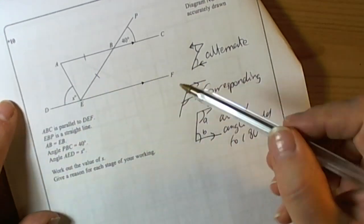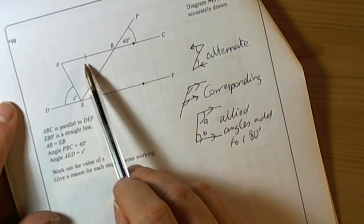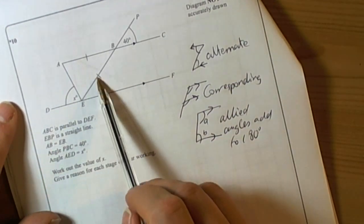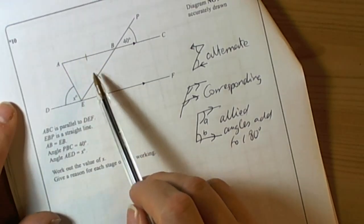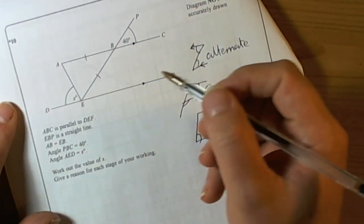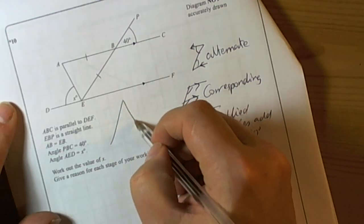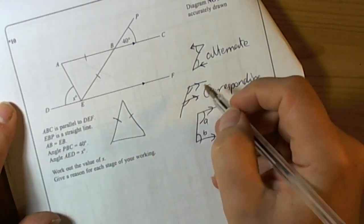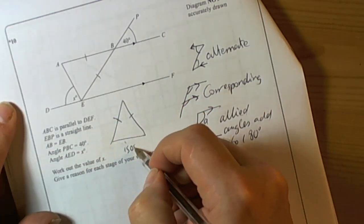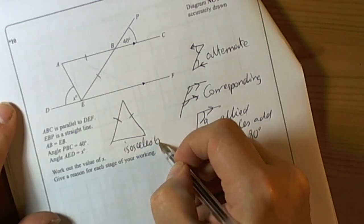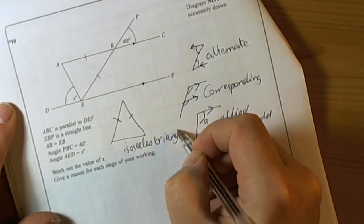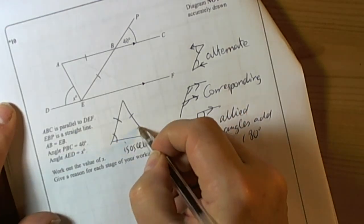We can also see by looking at the diagram we've got two lines of equal length shown by the dashes, so this is telling us that we're also dealing with an isosceles triangle. And in isosceles triangles the base angles are also equal, so those two angles will be equal.